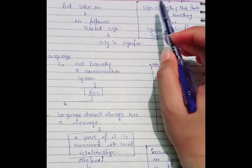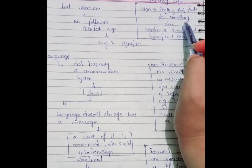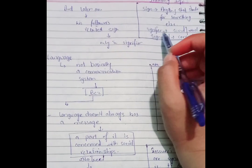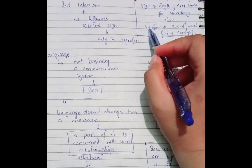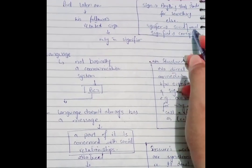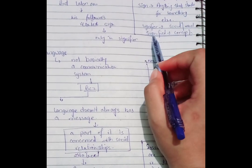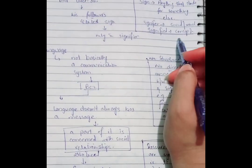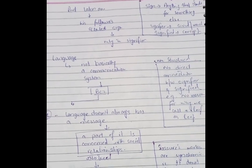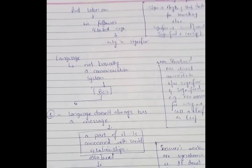A sign is anything that stands for something else. A signifier is the sounds or words used, and the signified is the concept that is being portrayed or delivered.